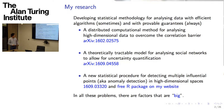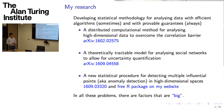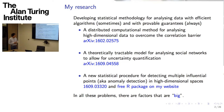The first project is about a distributed computational method for analyzing high-dimensional data. As Kerala alluded to, you have a high-dimensional problem where your features are highly correlated, and the question is how to break down the correlation barrier so that you can do parallel computing to speed up the estimation process. The second piece of research is about a theoretically tractable model for analyzing social networks — in particular, how to quantify uncertainties in the estimated parameters, motivated by a simple social network example. Finally, the third piece of research is about a new statistical procedure for detecting multiple inferential points, also known as anomaly detection in engineering, when you have a high-dimensional space.